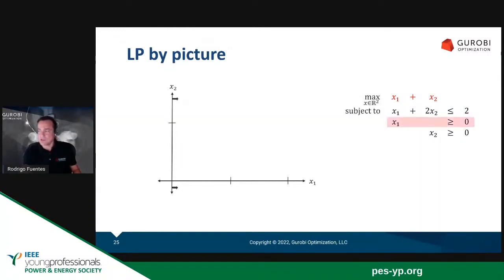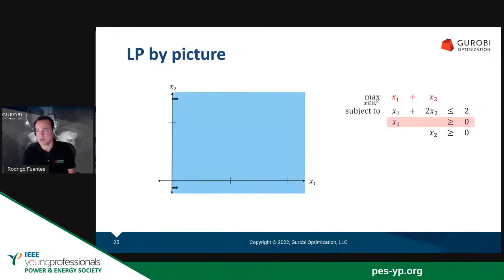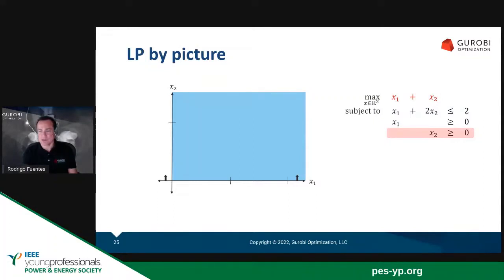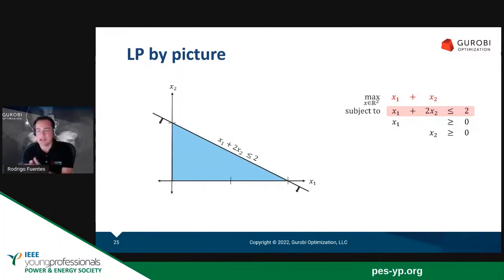Let's see how this looks. The easy one is X1 being positive — that means we're going to stay on the right-hand side of the Y axis where you see those arrows. That blue area is X1 being positive. Then we add another constraint, X2 being positive. If we add that, it limits us to the upper right quadrant. When we add the third constraint, X1 plus 2X2 less than or equal to two, the blue area you see on the slide is the feasible area defined by the constraints. We have to maximize X1 plus X2 staying within the blue area defined by those three linear constraints.